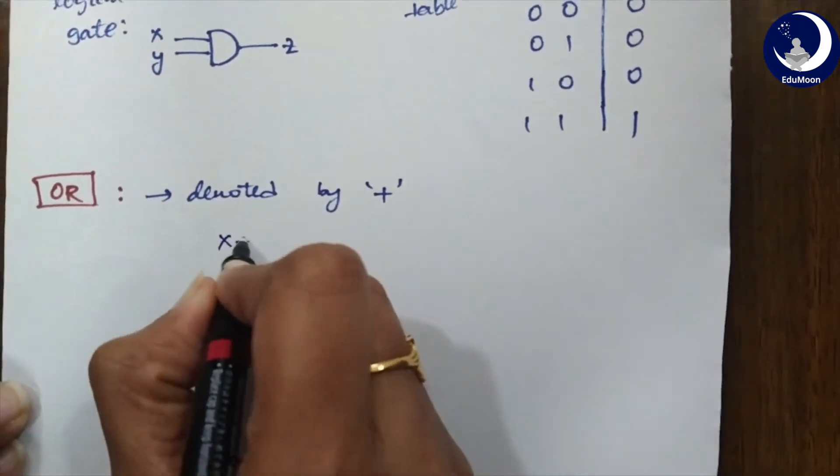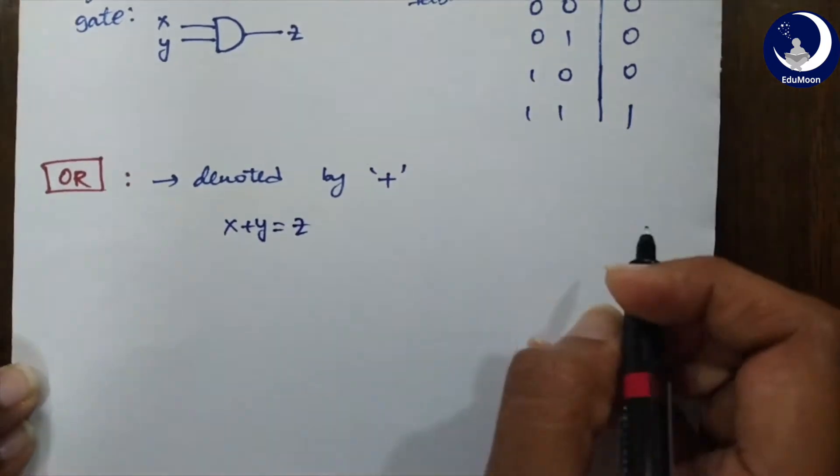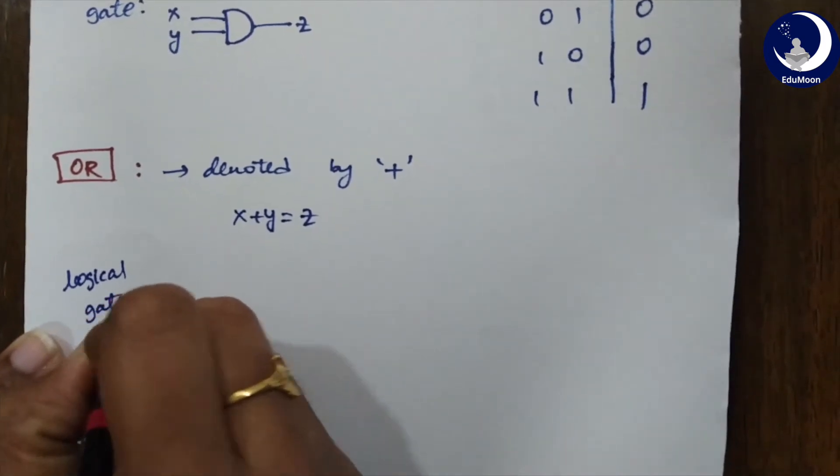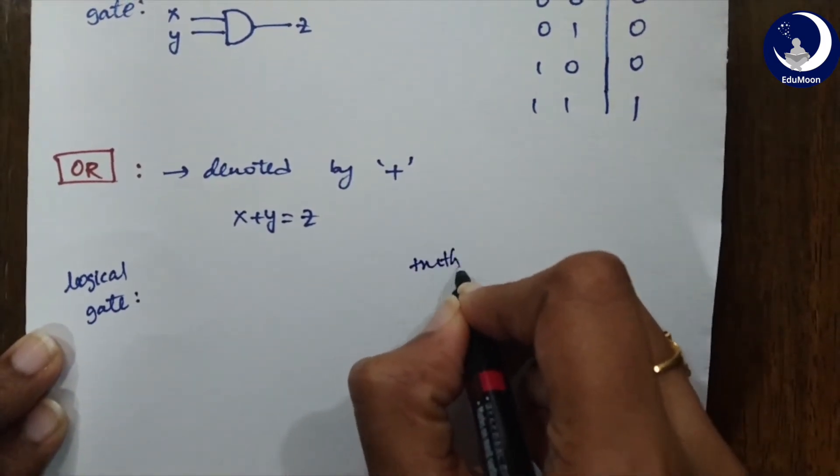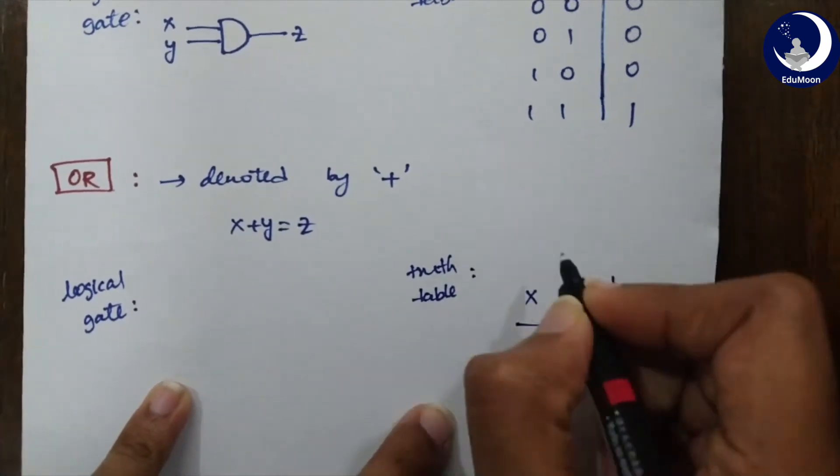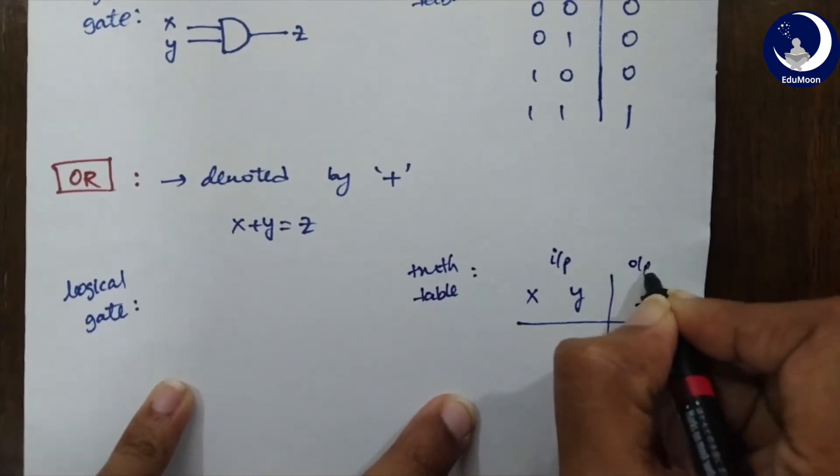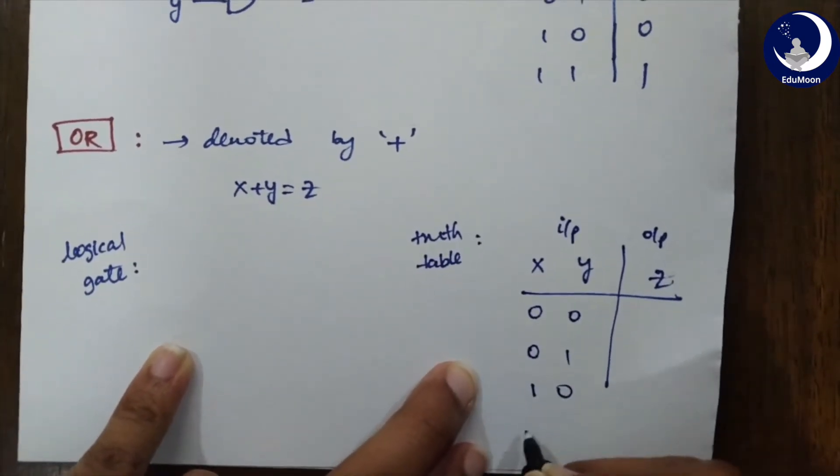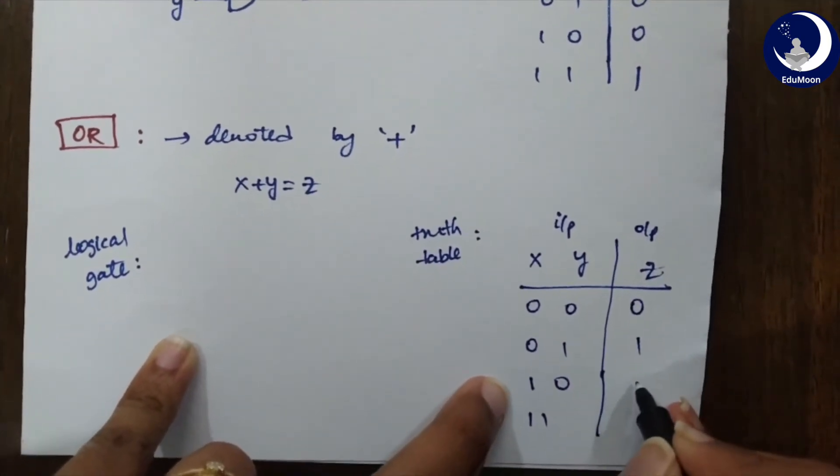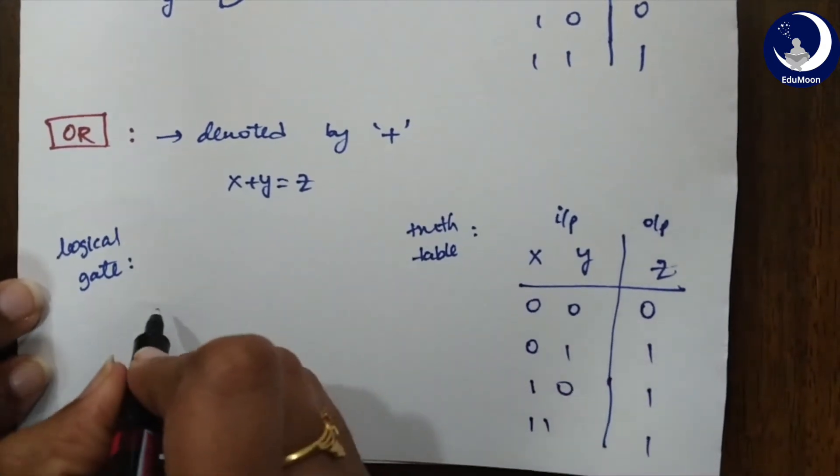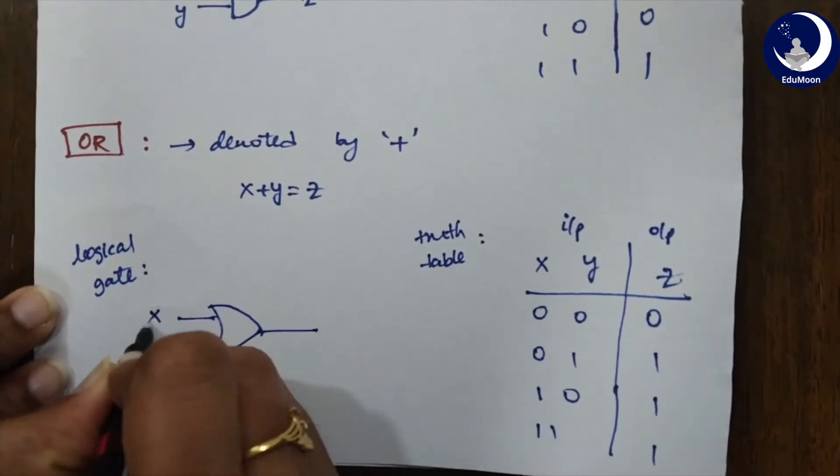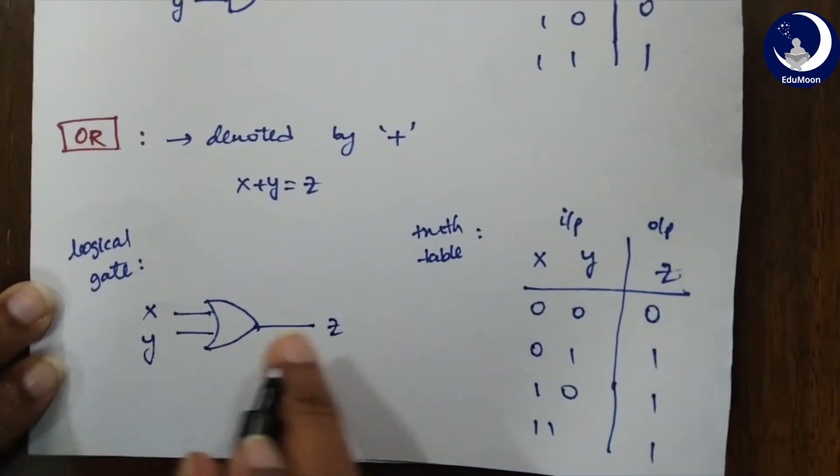OR is denoted by a plus like X plus Y equals Z. Again, let's look at its logical gate and truth table. First, I'll discuss the truth table for you. Here again, XY and Z. This is your input side and this is your output. It can again have only these four possible conditions. 0 plus 0 is 0. 0 plus 1 is 1. 1 plus 0 is 1. 1 plus 1 is again 1. Its logical gate can be given like this. This is X. This is Y. And this is Z. These two are input ports and this one is your output port.